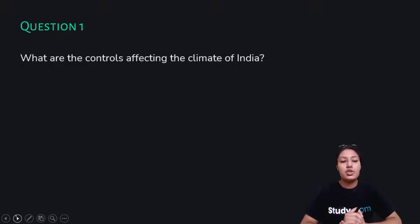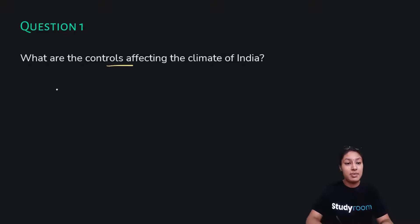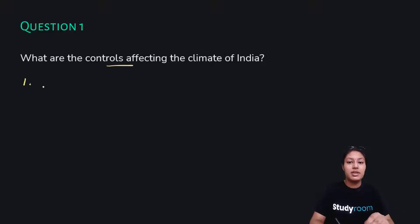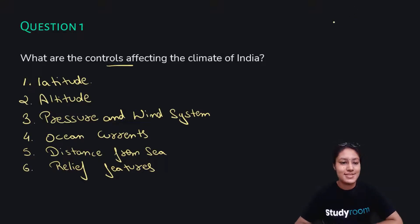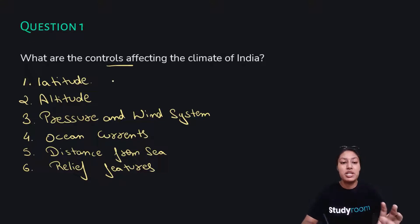Question number one: what are the controls affecting the climate of India? Very important question. We have briefly discussed each and every control. There are total six controls that affect the climate. Those six controls are: latitude, altitude, pressure and wind, ocean currents, distance from sea, and relief features. These are the six major controls affecting the climate of India.